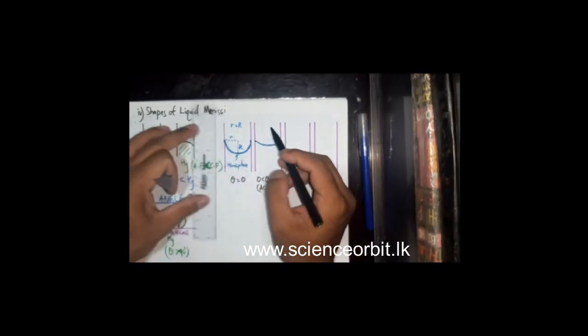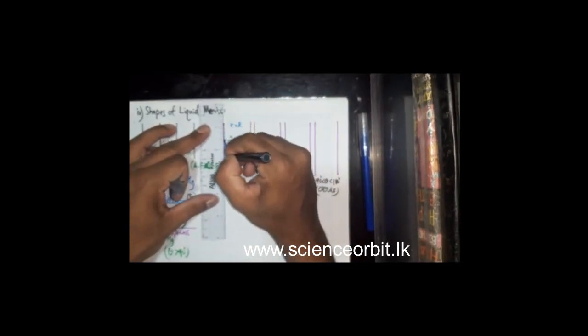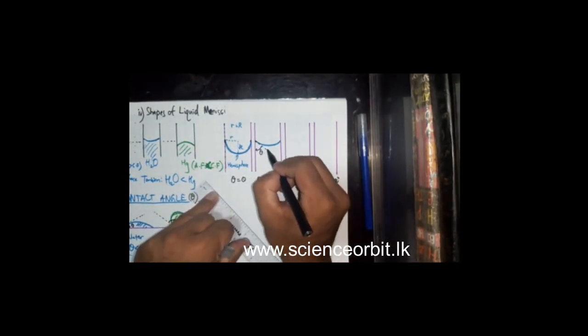When the contact angle is an acute angle, less than 90°, the meniscus is going to be a part of a sphere — the bottom part of a sphere. At the point of contact, you draw the tangent to the liquid surface and the solid surface tangent, and the angle inside the liquid is theta, which is less than 90°.